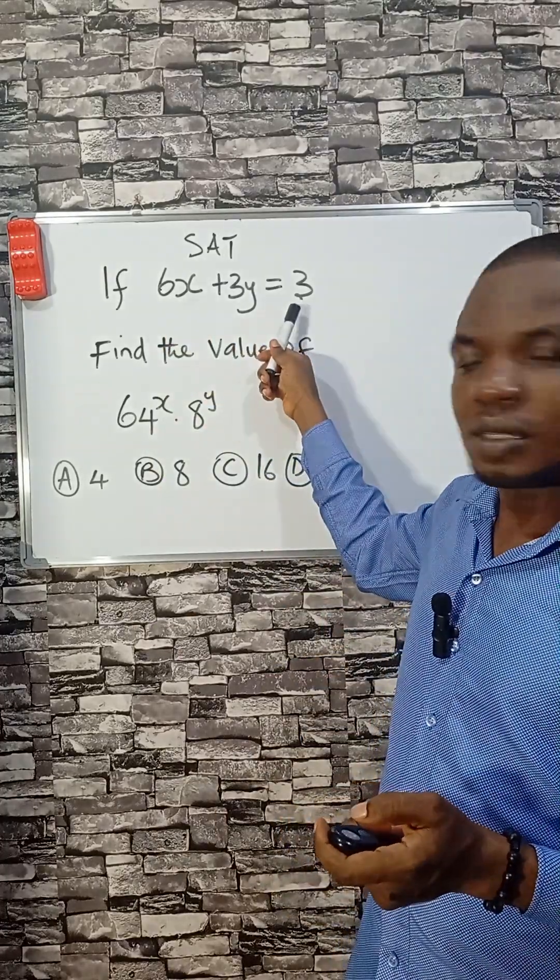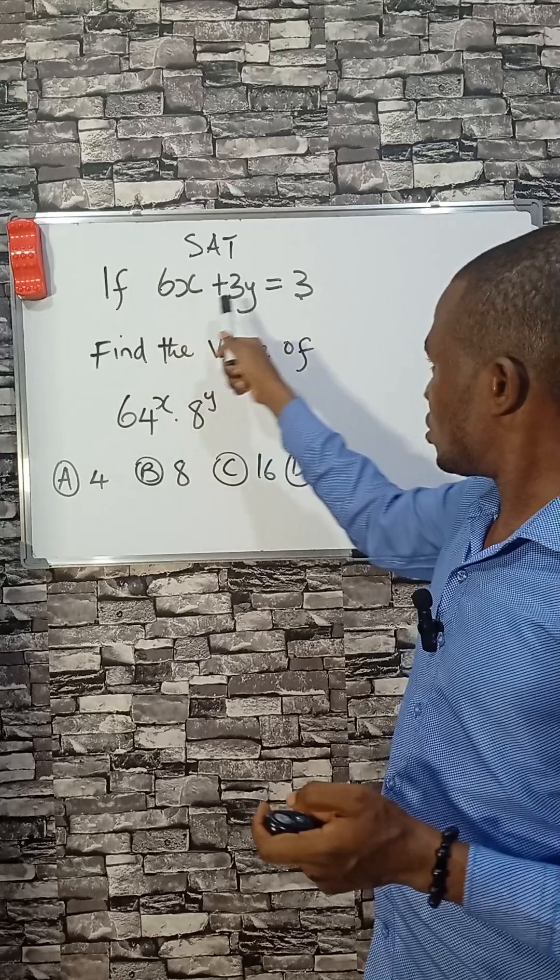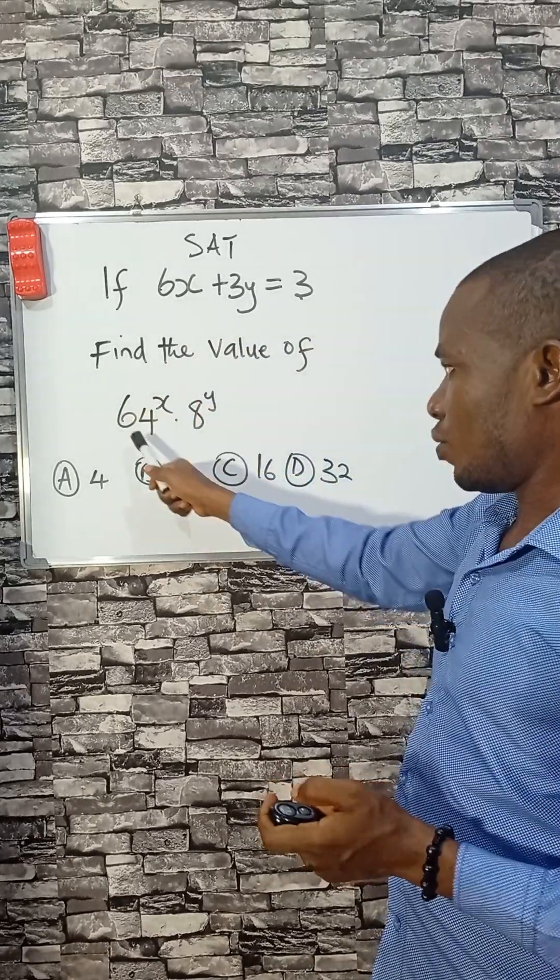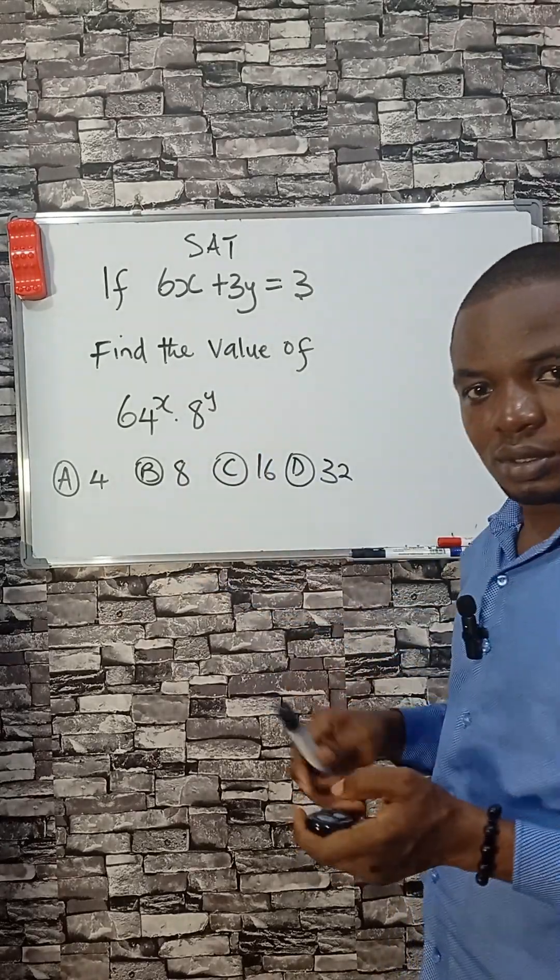Many students fail this SAT exam question. If 6x + 3y = 3, find the value of 64^x times 8^y. Here are the options.